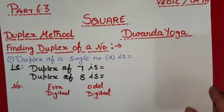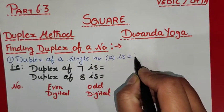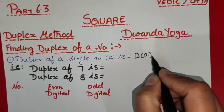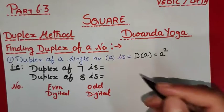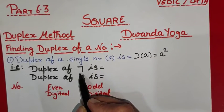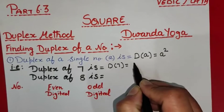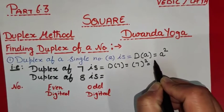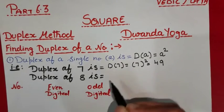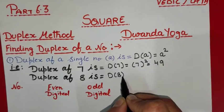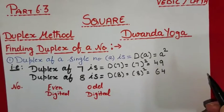If we want to find the duplex of a single number a, then its duplex — denoted as duplex(a) — will be a squared. For example, the duplex of 7 will be 7² = 49. Similarly, the duplex of 8 will be 8² = 64.